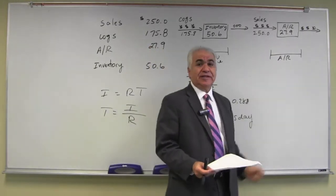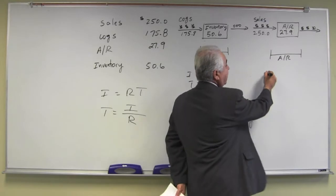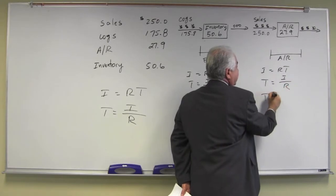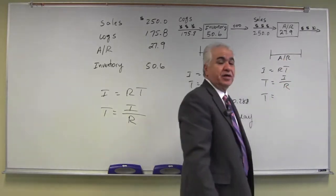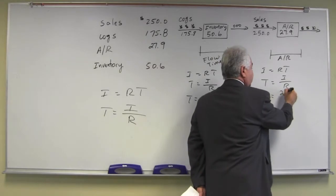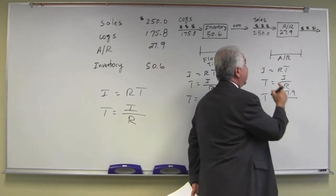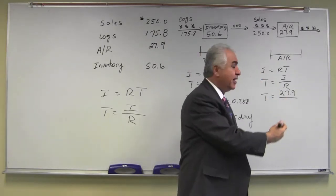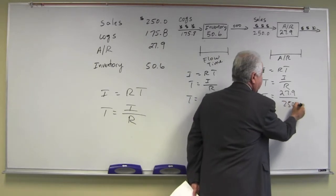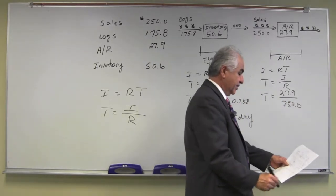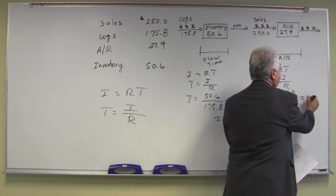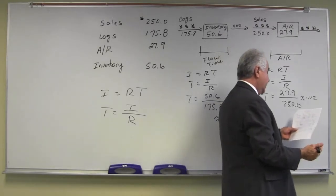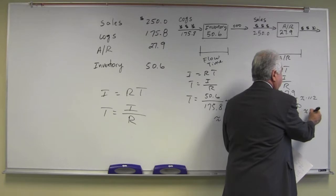Let's relate that to the account receivable. Similarly, we have I equals RT or T equals I over R. In this case, average inventory is our average account receivable. $27.9 million divided by our throughput of the process for the account receivable process is $250 million. And that will give us approximately 0.112 years. And we can convert that into days. And that is approximately 41 days.